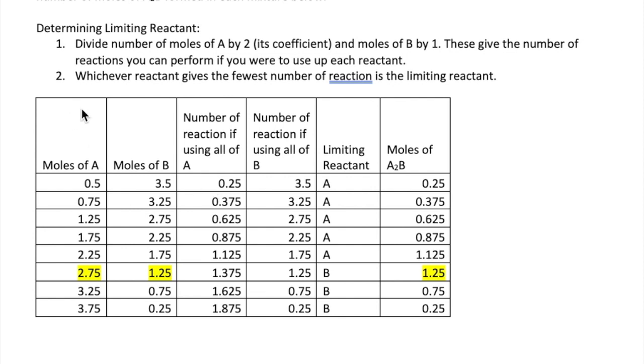We can repeat this process for all the other ratios of A and B, and then calculate the number of moles of A₂B that's produced. Notice the pattern that as the limiting reactant quantity is increased, the number of moles of products also increase, and that makes sense.